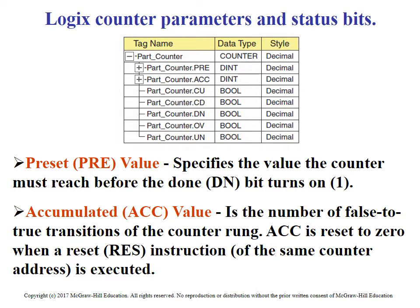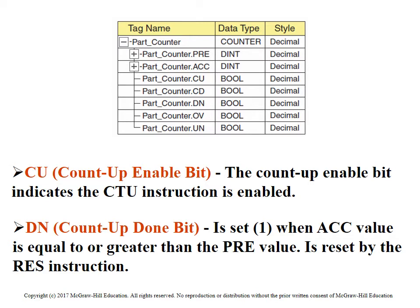Here are all the pieces: we've got the preset word — double integer, so 32 bits. Accumulated value is also a double integer, again 32 bits. And then all these components here are individual bits and boolean: counter up, counter down, done bit, overload, and underload. The preset value specifies the value the counter must reach before the done bit turns on. Like the 500 series, the accumulator value must be equal to or greater than the preset value for the done bit to turn on.